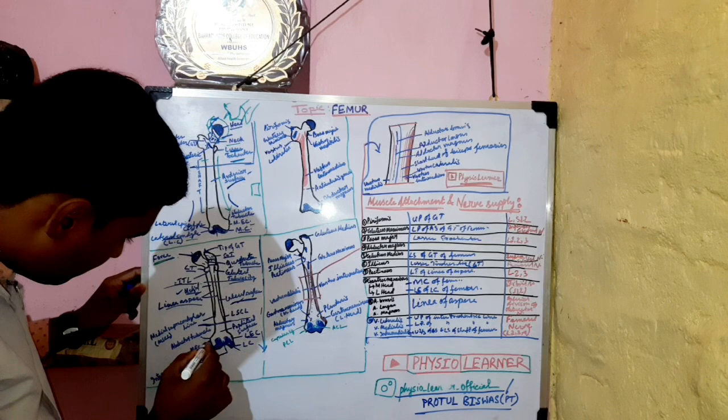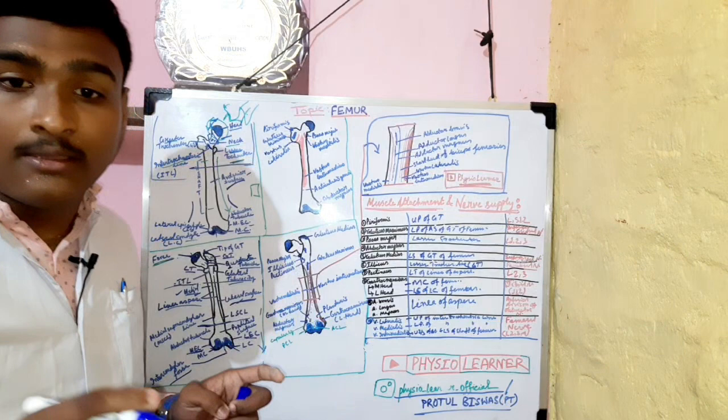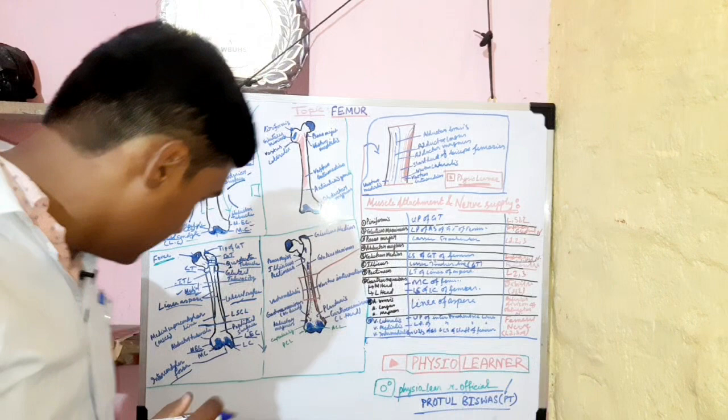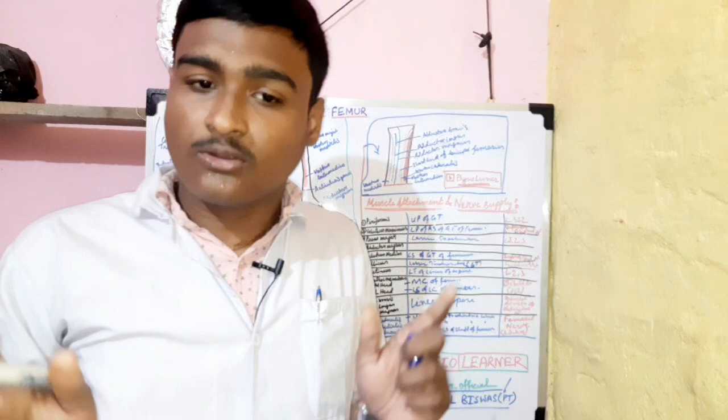Below the medial epicondyle, there is a projection called the adductor tubercle. There is also the intercondylar fossa, also called the intercondylar notch, which separates the lower part between the two condyles.